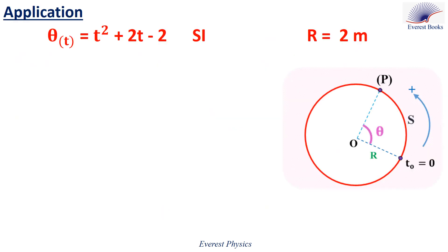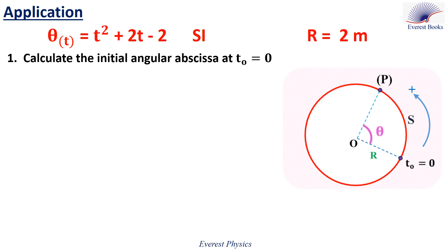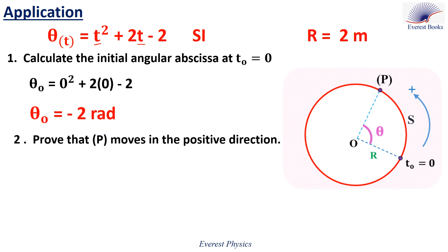Let's solve an application. A particle P moves along the circumference of a circle of center O and radius R = 2 meters. The angular abscissa of P is given by θ = t² + 2t − 2 in SI units. Part one: calculate the initial angular abscissa θ(0). To calculate θ(0), replace t by zero in the expression of θ, so θ(0) = −2 radians.